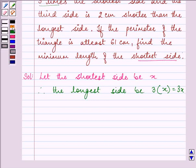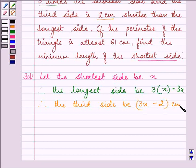The third side is two centimeters shorter than the longest side. The longest side is 3x and it is two centimeters shorter than it. Therefore, it will be 3x minus 2 centimeters.